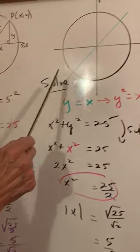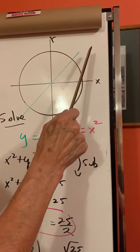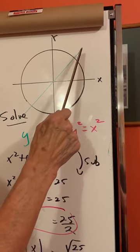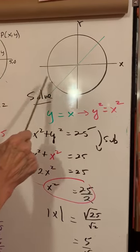So let's back up over here. So this point will be 5 over the square root of 2 and 5 over the square root of 2. And if I go down here, they will both be negative. Negative and negative.